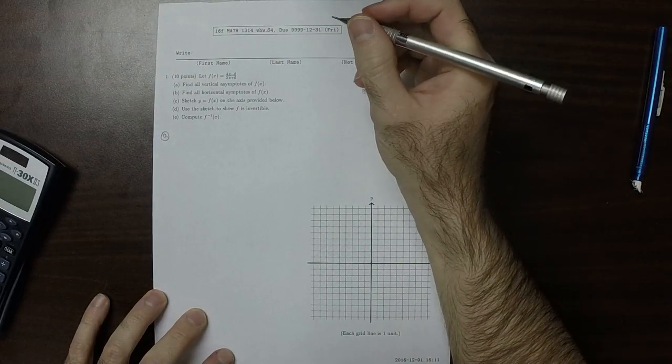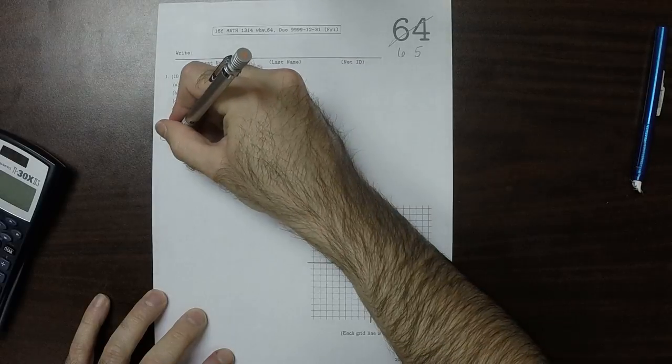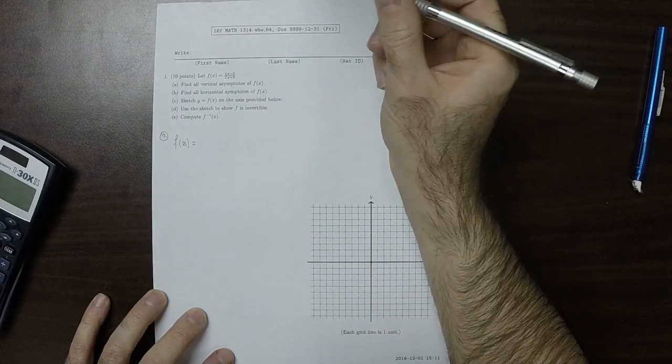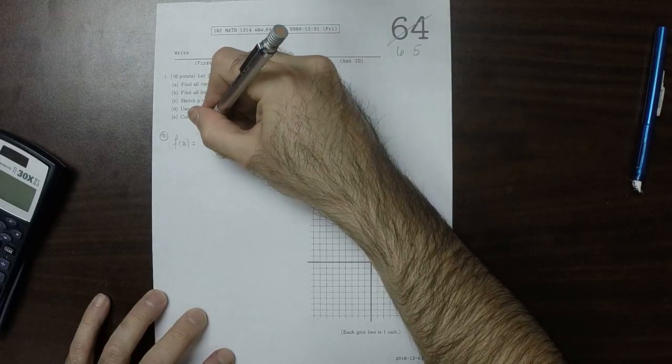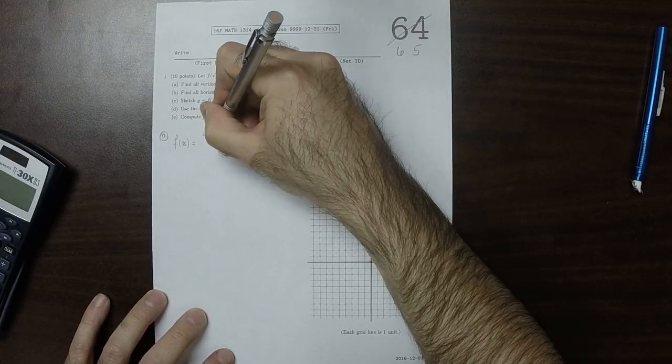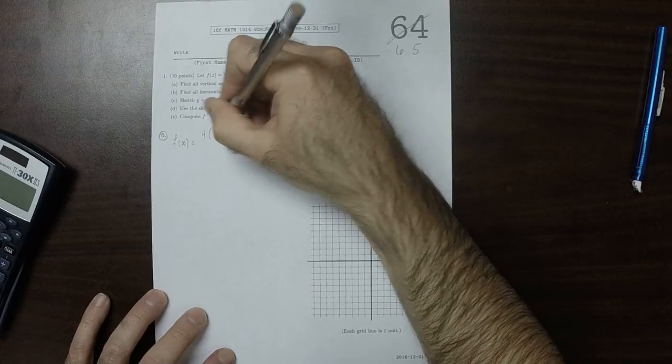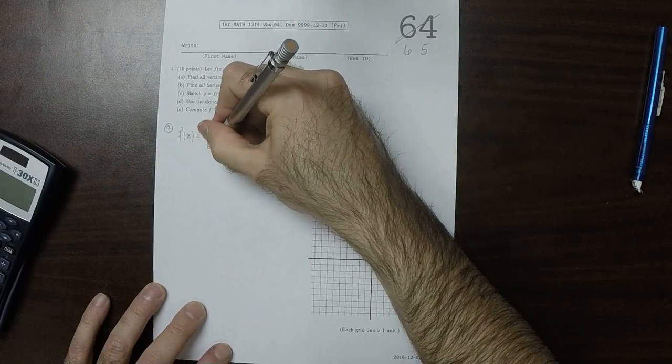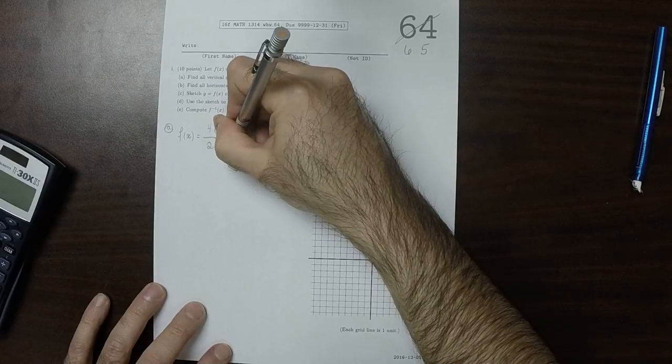What we want to do is factor F. So F of X is, if I factor 4 out of the numerator, that would be X minus 5 over 4. And if I factor 2 out of the denominator, that would be 2 multiplied by X plus 3.